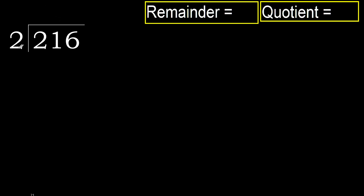216 divided by 2. 2 is not less, therefore start with 2. 2 multiplied by which number is nearest to 2 but not greater.